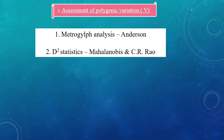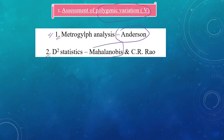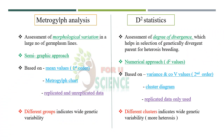Now, to assess polygenic variations, there are two main approaches used in statistics. One is metroglyph analysis and the other is D² statistics. The metroglyph analysis was mainly given by Anderson, and in the case of D² statistics it was given by Mahalanobis and applied by C.R. Rao — two Indian scientists who made a significant and impactful contribution to D² statistics. Both methods are used for polygenic variation analysis but their approaches are different.